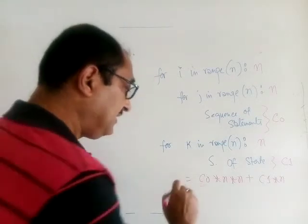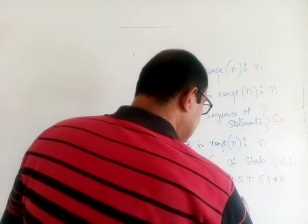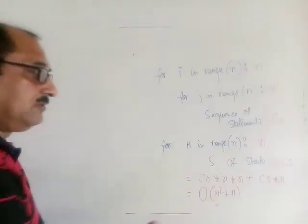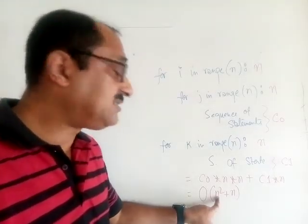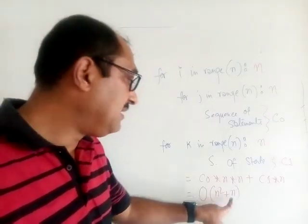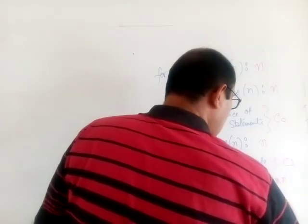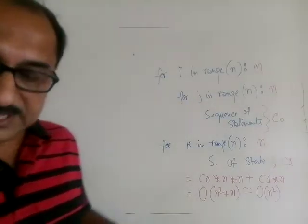So what we get: the total time must be c0 multiplied by n multiplied by n plus c1 will be multiplied by n. Now here we can write it in terms of the equation: it is n square plus n. The dominant term we learned yesterday. For a very large input of n what will happen: this will become a negligible quantity. So we can say this is absolutely equal to O(n²).